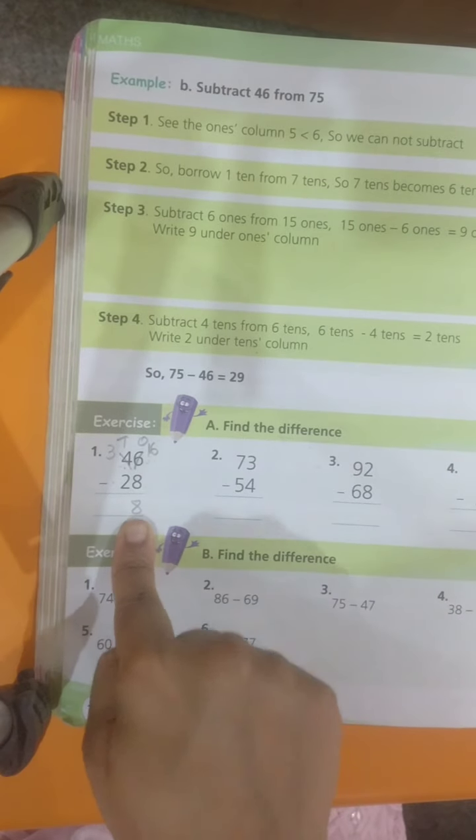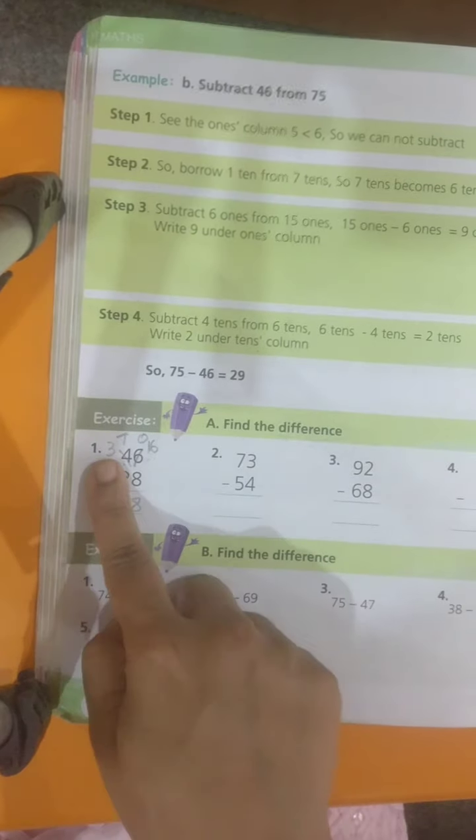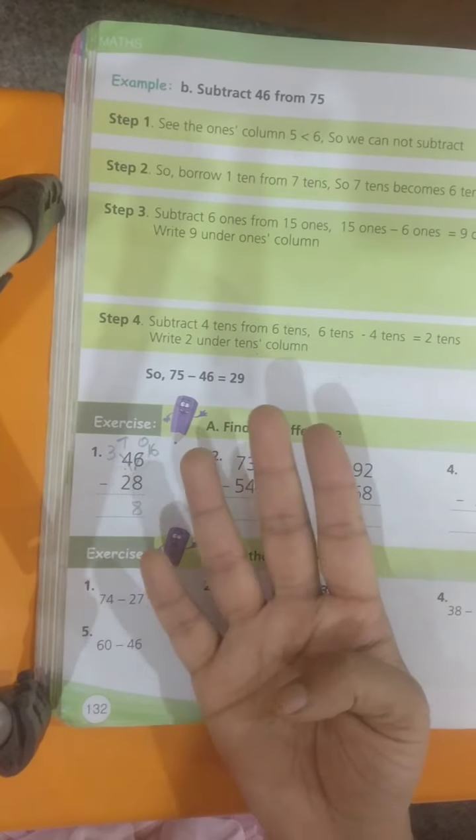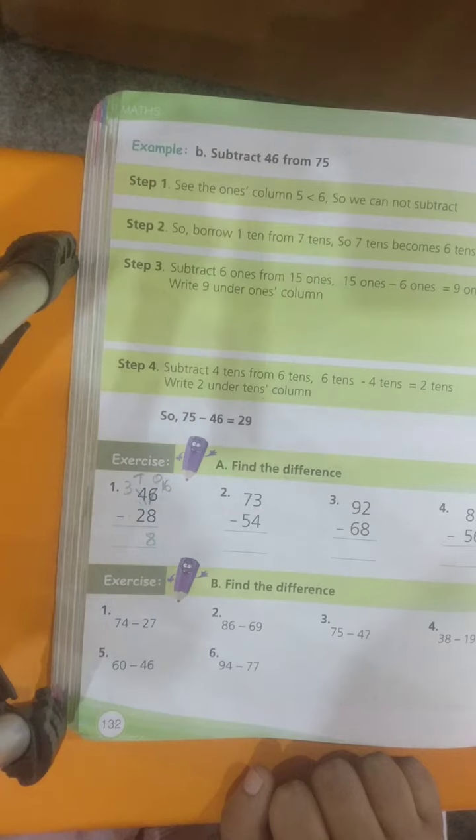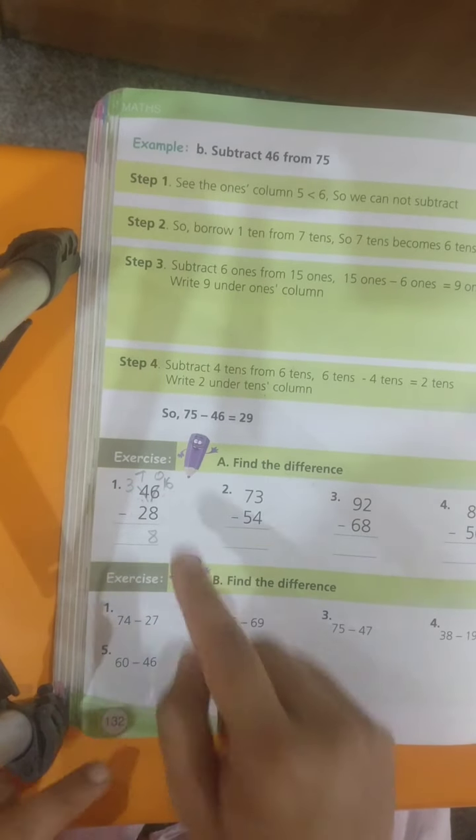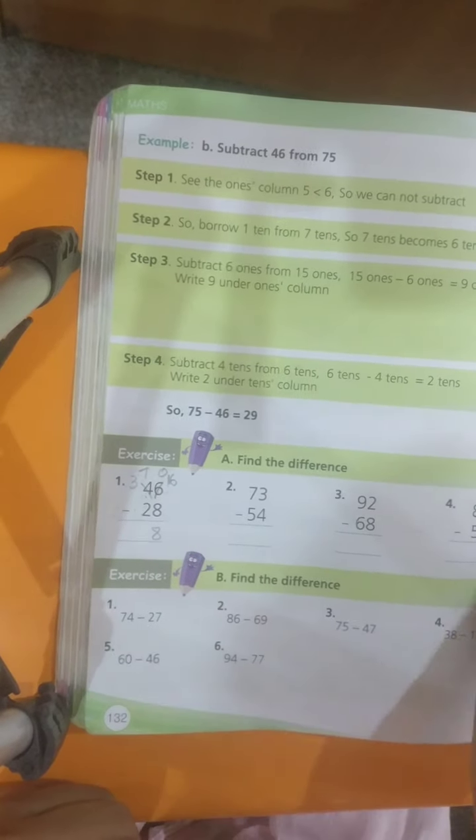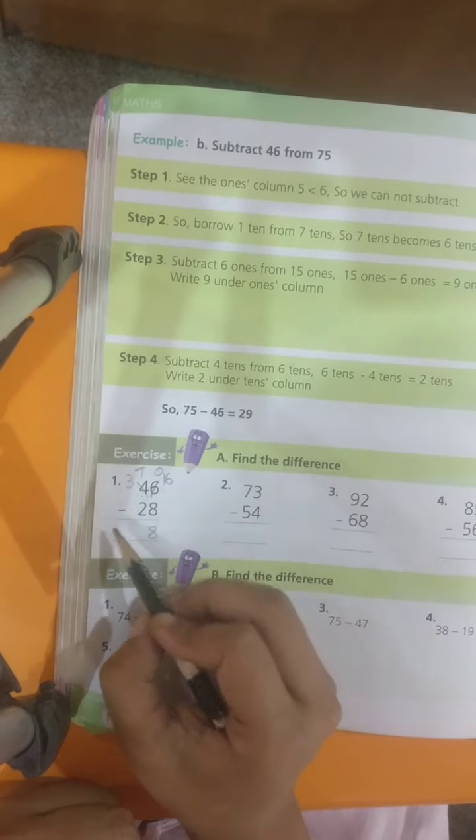You get the same answer. Whichever is easy for you, you follow that method. Now 3 minus 2. You can open your finger and close. 3 fingers open, 2 close. You get 1. 1 is my answer here.